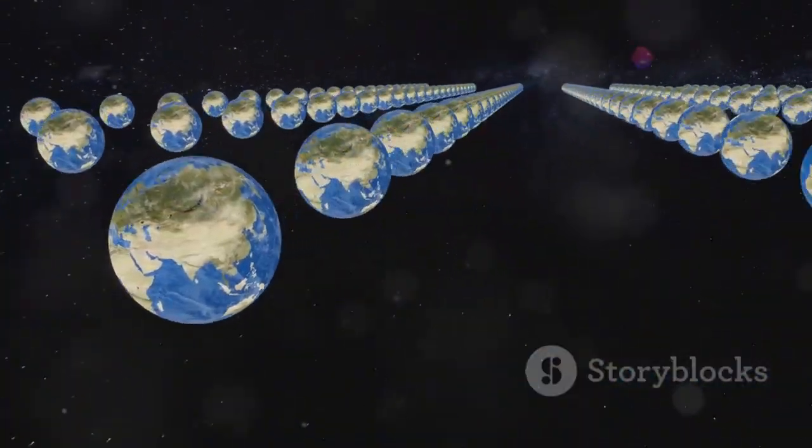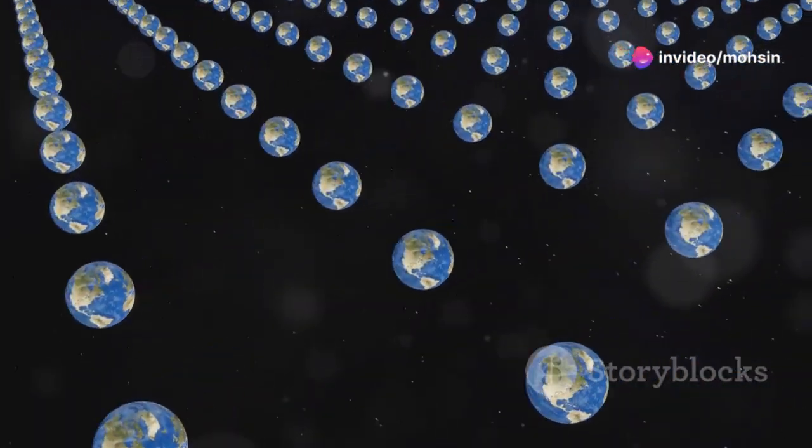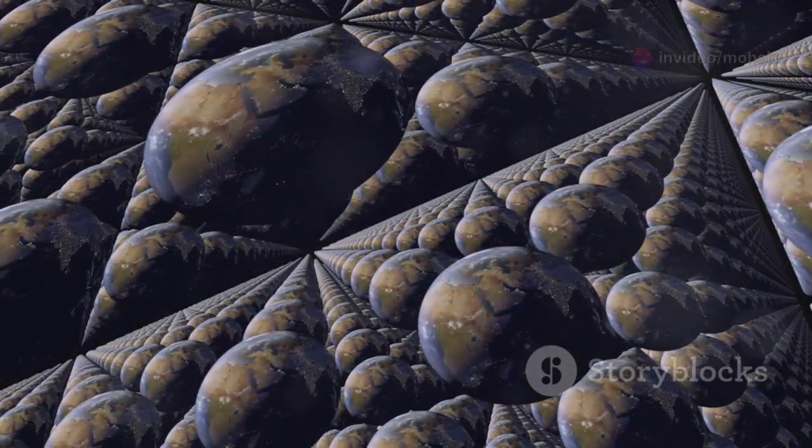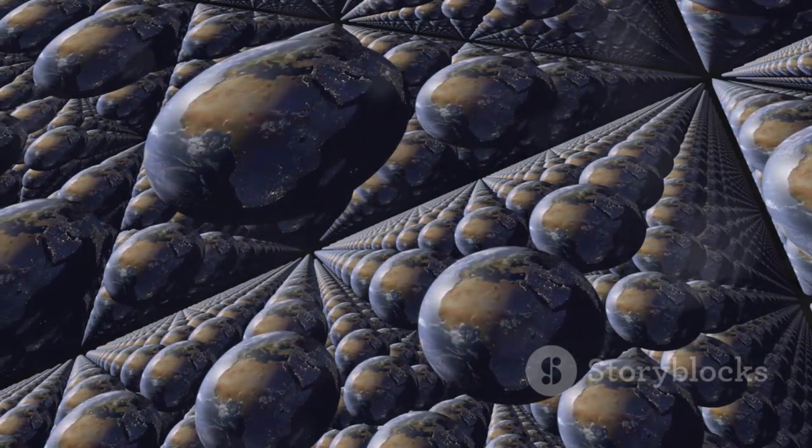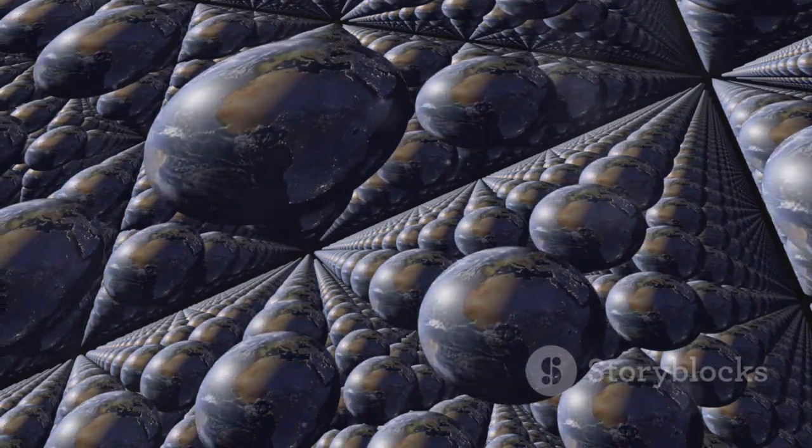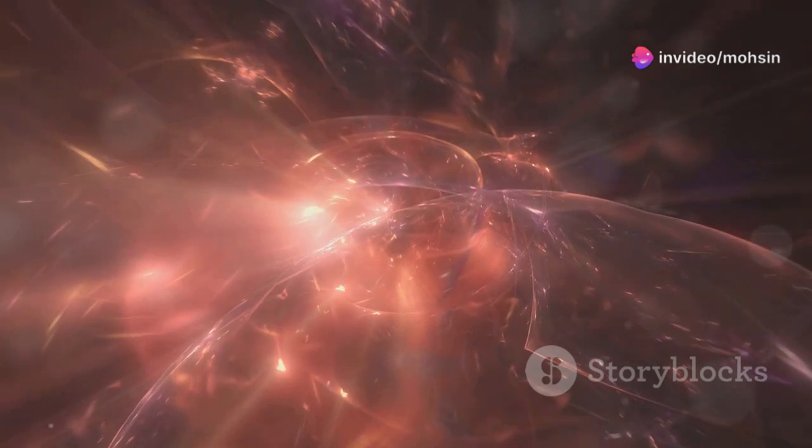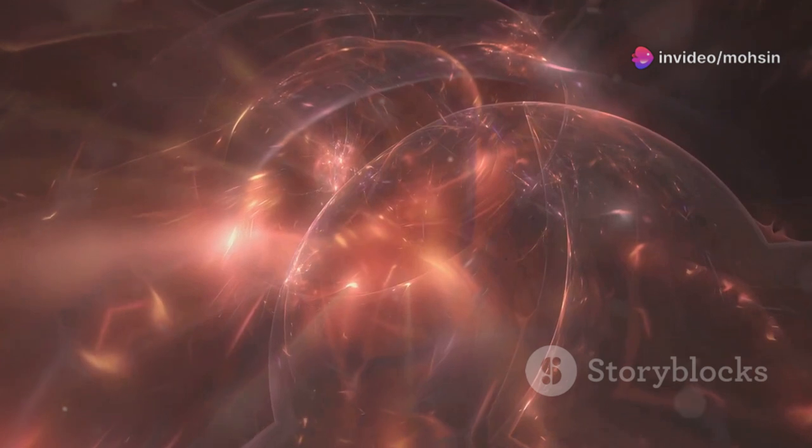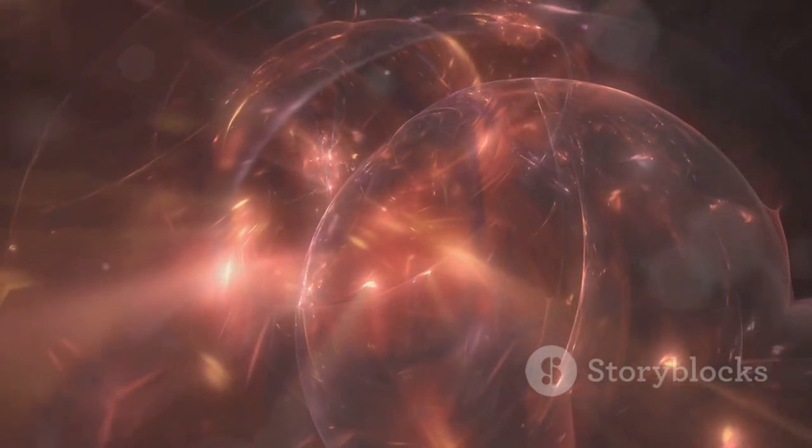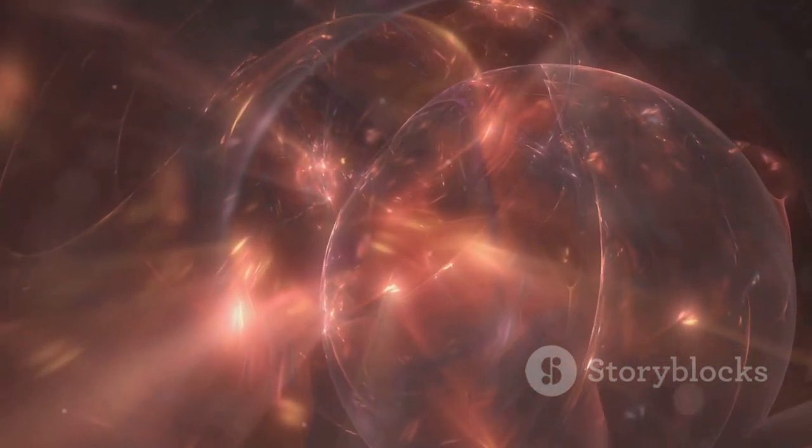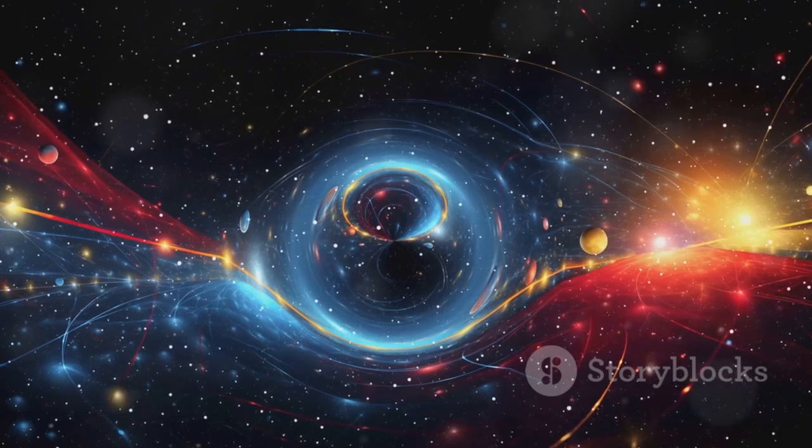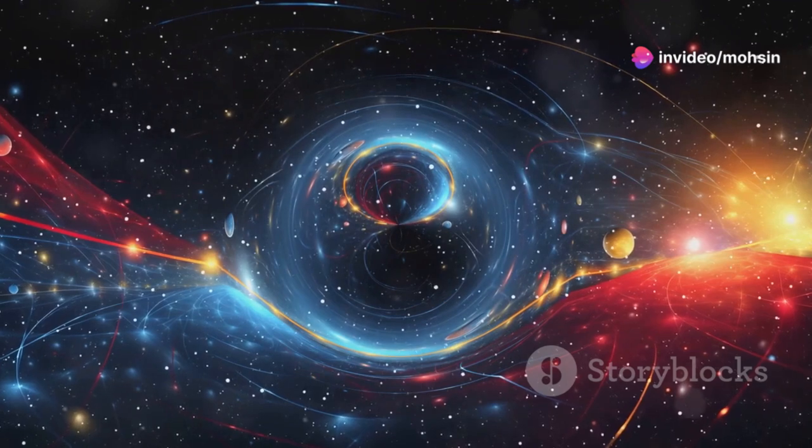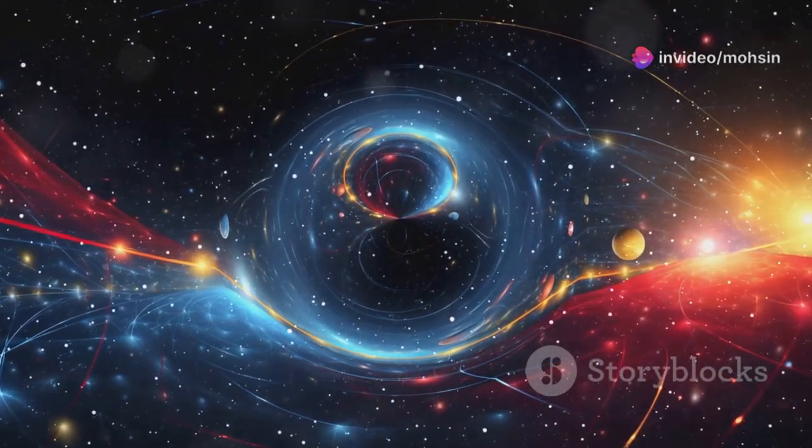Each universe could be a different slice or layer in the vast structure of time, existing alongside countless others. Alternate histories and futures could be physically real, existing in different temporal planes. Every choice, every possibility might play out somewhere in this expanded temporal reality, with entire worlds branching off from every decision. We'd still experience our own timeline, but the universe would be far richer. This new temporal geometry could help unify relativity and quantum mechanics. By expanding our view of time, we might finally bridge the gap between the very large and the very small.